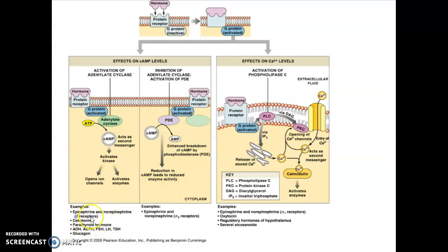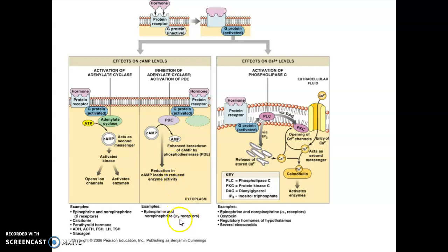Looking at examples of hormones that activate enzymes: calcitonin, parathyroid hormone, antidiuretic hormone, ACTH, FSH, and glucagon would all activate enzymes. To reduce enzyme activity, epinephrine and norepinephrine going to alpha-2 receptors would accomplish that.